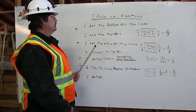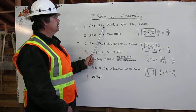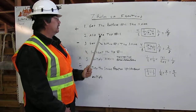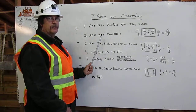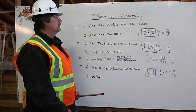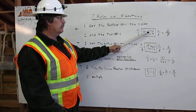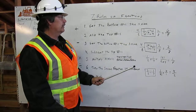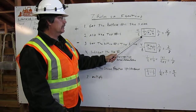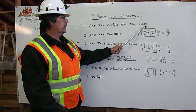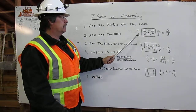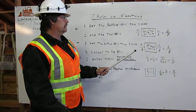For addition, first you get the bottom numbers the same, and then you add the top numbers. In our example, one-half plus one-fourth — first I'll draw a box around them to indicate that I'm going to change the numbers.